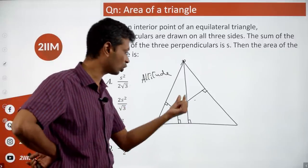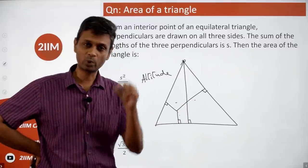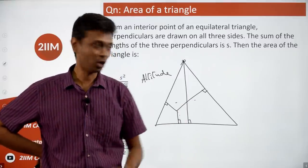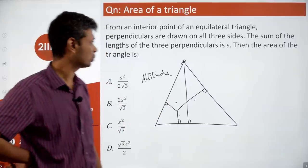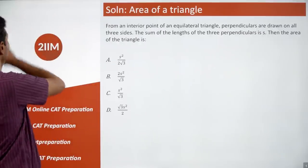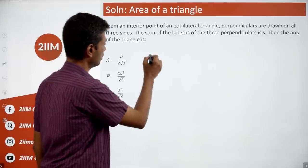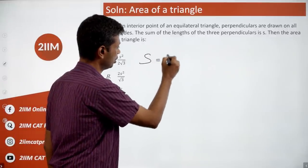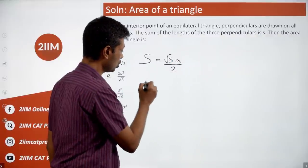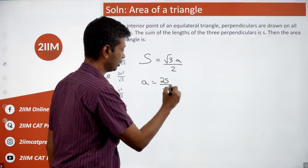You could have picked the centroid, orthocenter, or circumcenter — they're all coincident. From that point you always come back to the same result. This question effectively says S equals (√3/2)·A, so A equals 2S/√3.